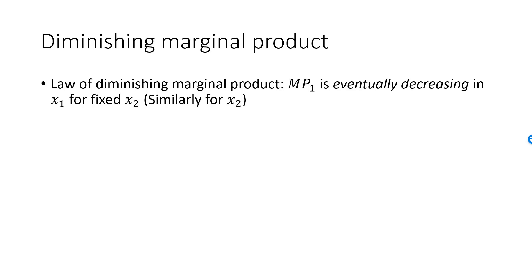As you keep increasing labor, it is possible or even likely that marginal product will eventually become zero or even negative — you then produce less health services by increasing labor beyond this overcrowded amount. Keep in mind that the law of diminishing marginal product does not claim that MP1 is always decreasing in x1. It is possible that MP1 is initially increasing in x1; in our example, with a very small amount of labor, you need a certain amount to make the facility work properly. The law of diminishing marginal product is, in a sense, an obvious result: factors of production are best used in certain proportions, and if one is much higher, increasing it even more will have a very small effect on output.